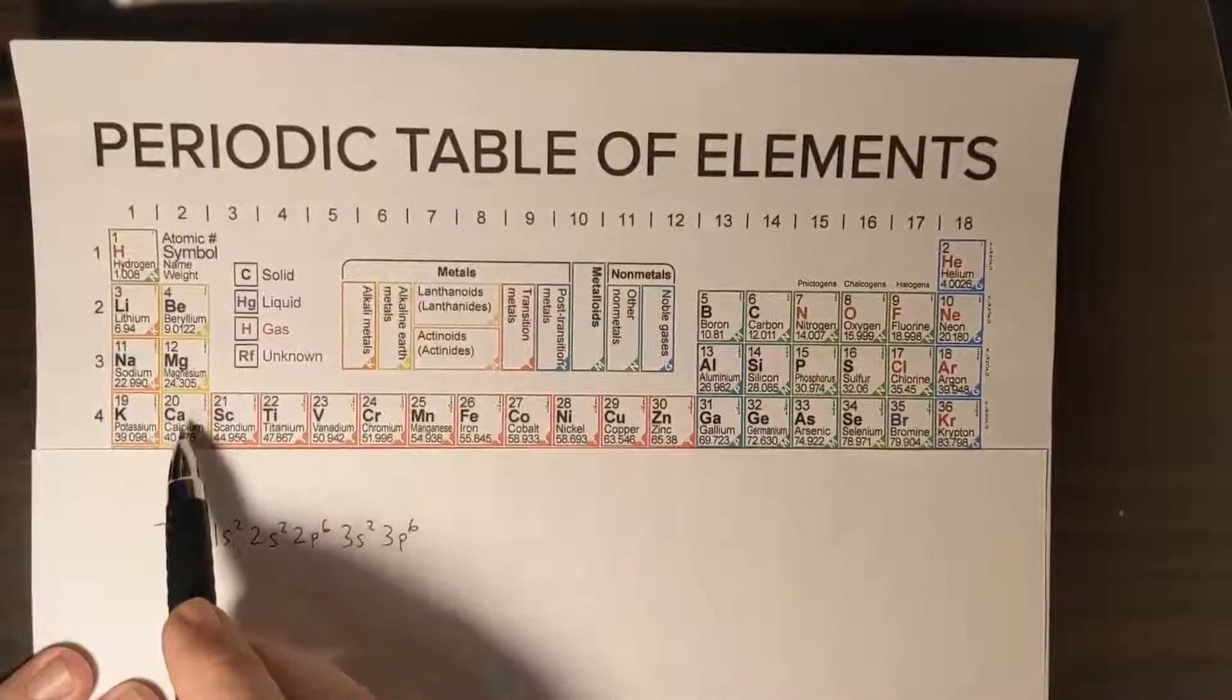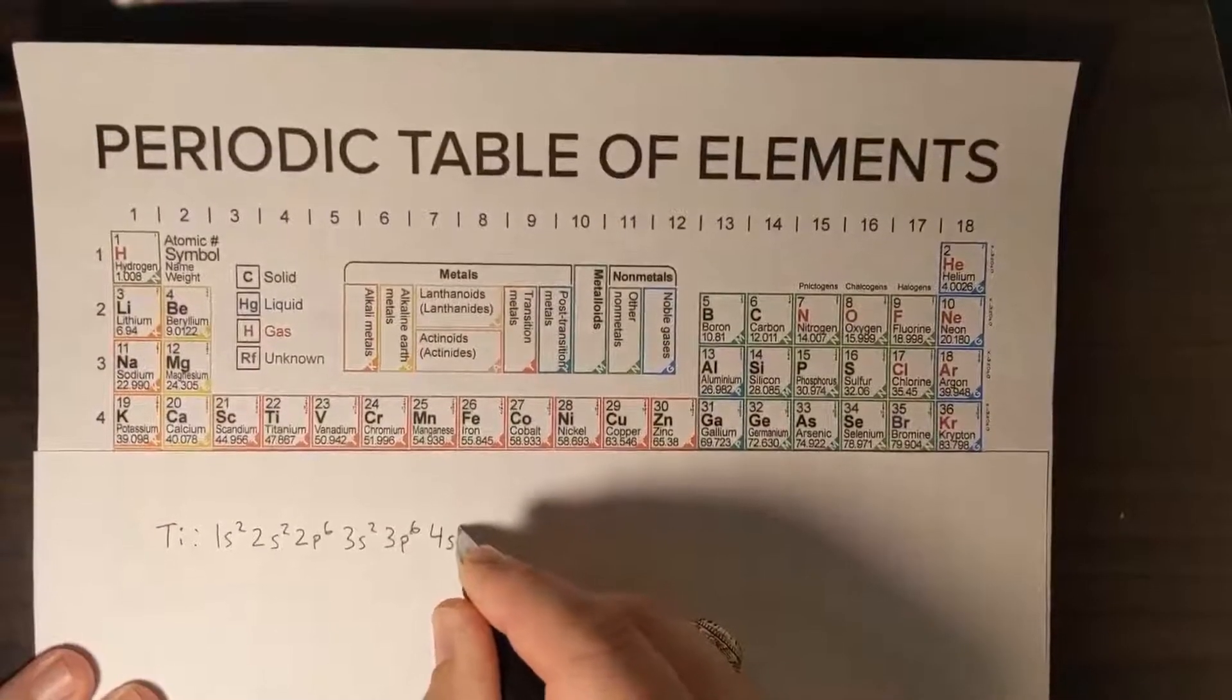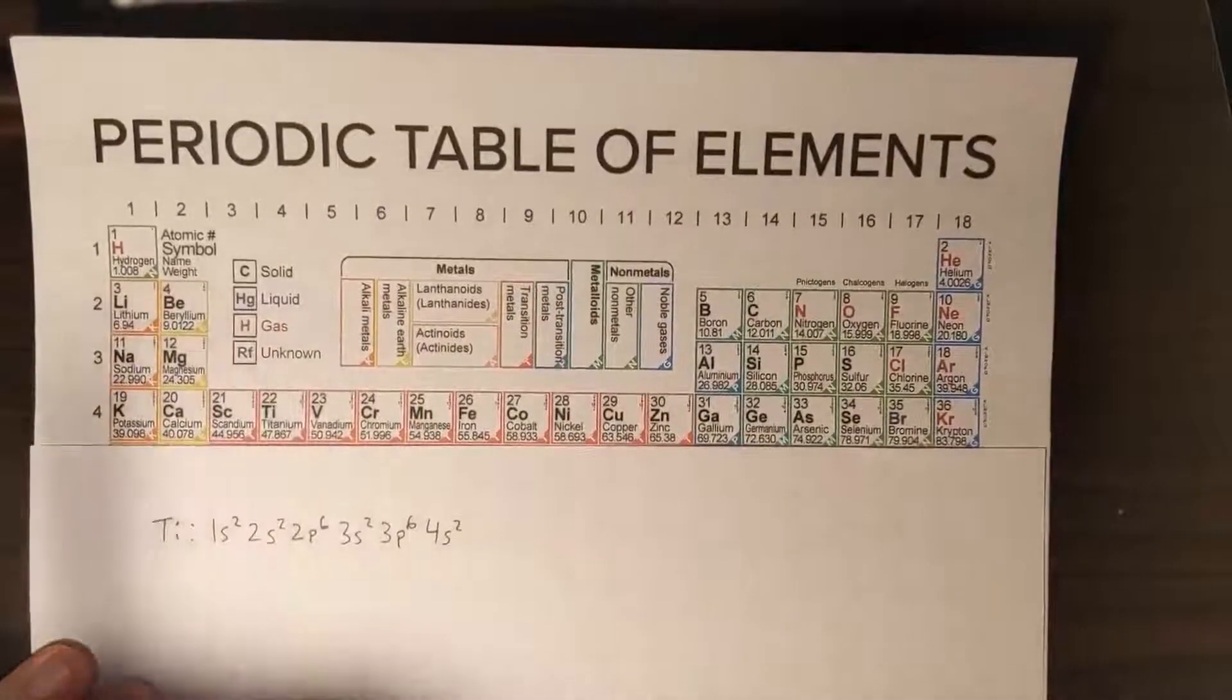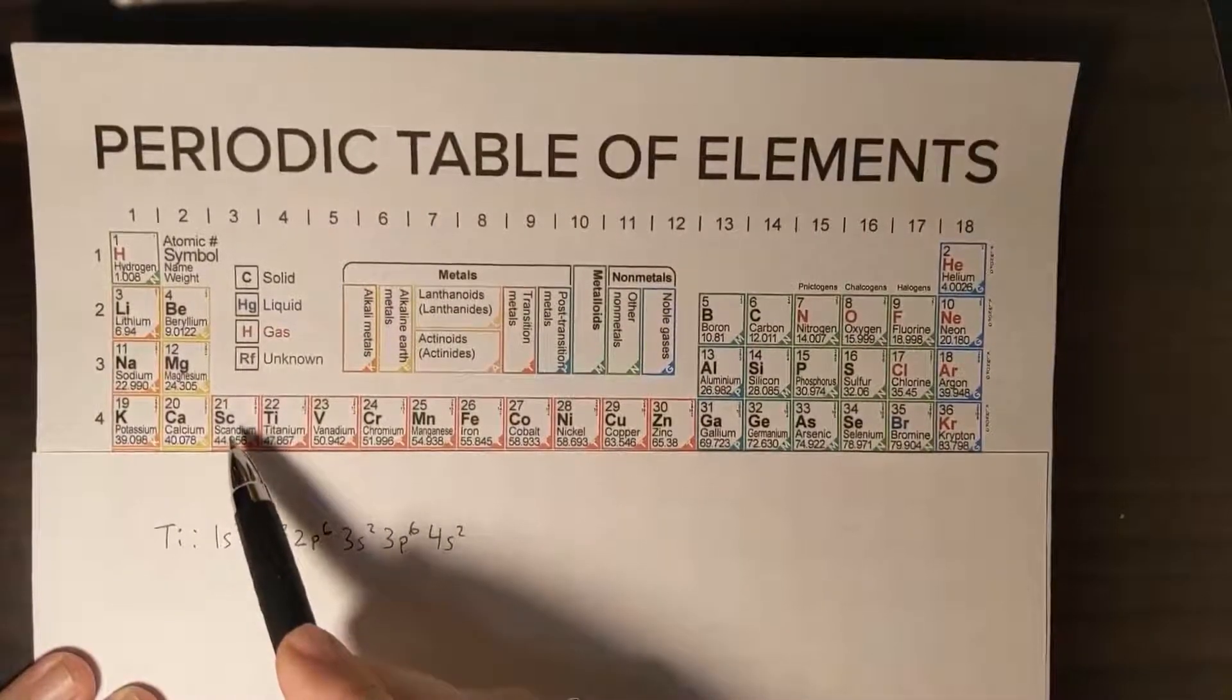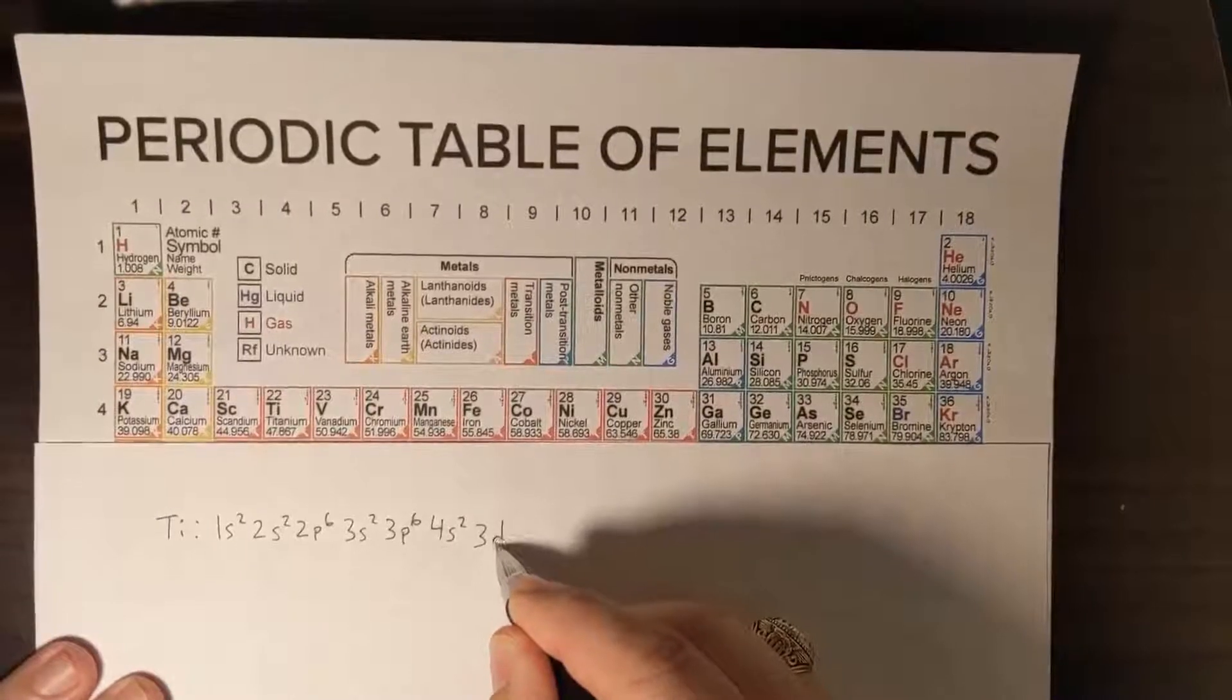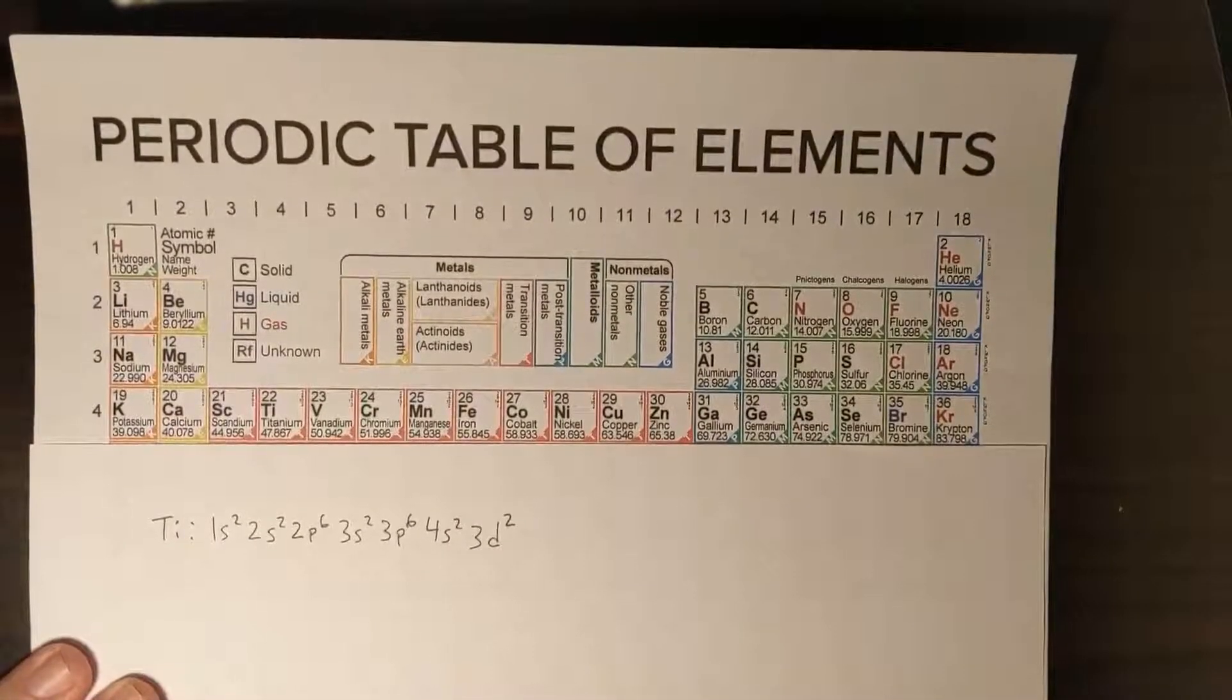And now with potassium we're at 4s1, 4s2. That ends the 4s orbital and now we get into our transition metals. And remember, the energy level for our transition metals is always one less than the row that we're on, so this is 3d1, 3d2. That would be our electron configuration for titanium.